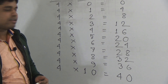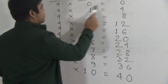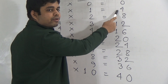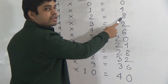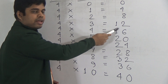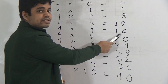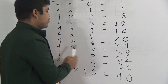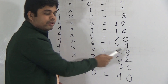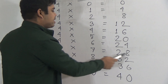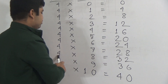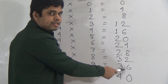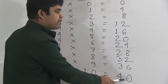Please read with me: 4 zeros are 0, 4 ones are 4, 4 twos are 8, 4 threes are 12, 4 fours are 16, 4 fives are 20, 4 sixes are 24, 4 sevens are 28, 4 eights are 32, 4 nines are 36, 4 tens are 40.